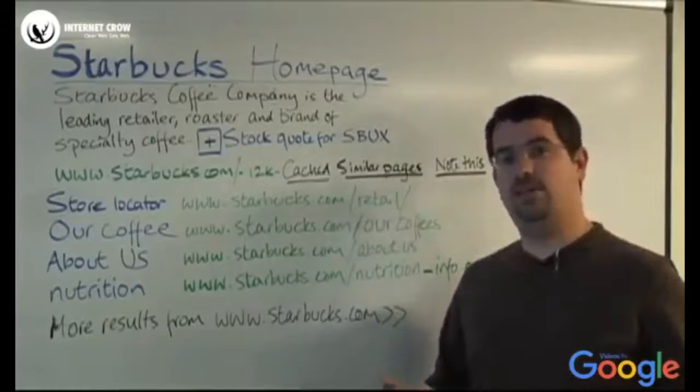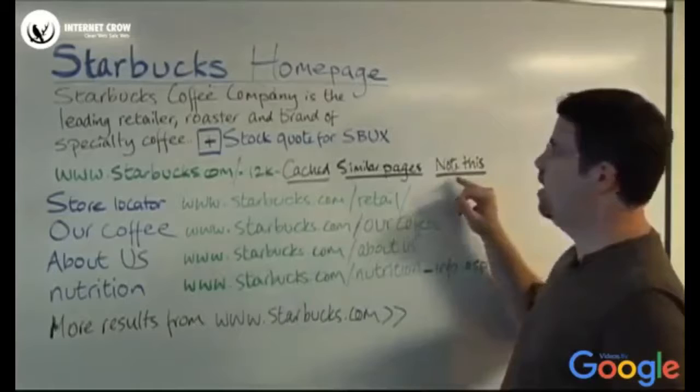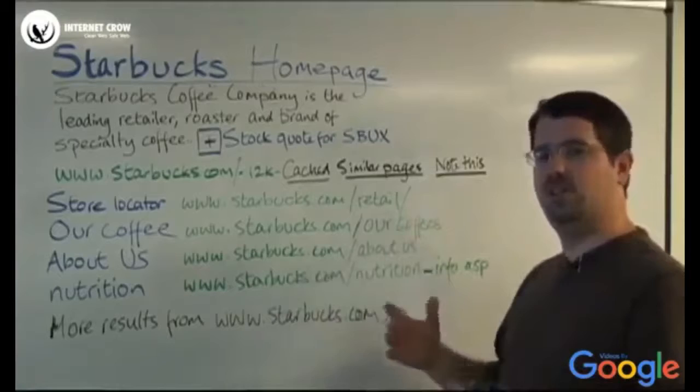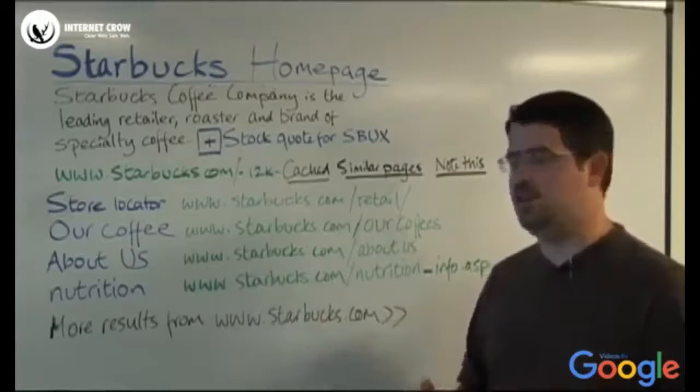Similar pages shows you related pages to Starbucks. So, maybe other businesses or other pages you'd be interested in. And a lot of times, if you're logged into Google, you'll see note this. If you're a student or if you're doing research, this is really handy. It works with Google Notebook. And all it does is it says, save this off. As I'm doing my research, I want to save this result and be able to come back to it later and maybe aggregate all this stuff together on some research that I'm doing.